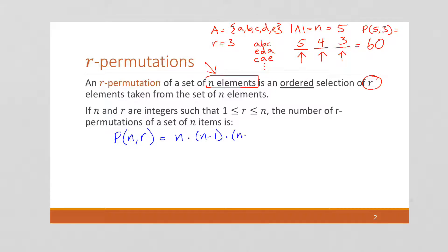Times n minus 2 ways of choosing the next element, and so on, all the way down to n minus r plus 1.